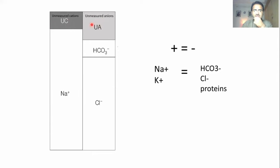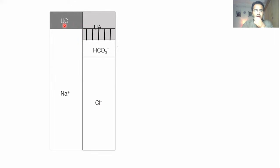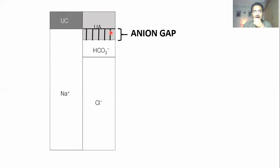Looking at this diagram, unmeasured anions are a little more in concentration compared to unmeasured cations. This part of the diagram — where unmeasured anions are greater than unmeasured cations — this is the anion gap. This part of unmeasured negatively charged ions which is greater than unmeasured cations is the anion gap.